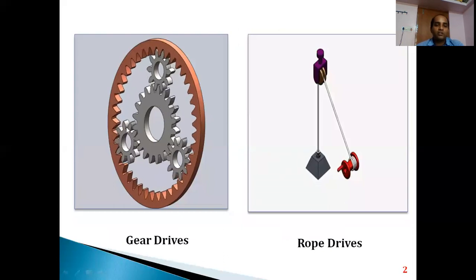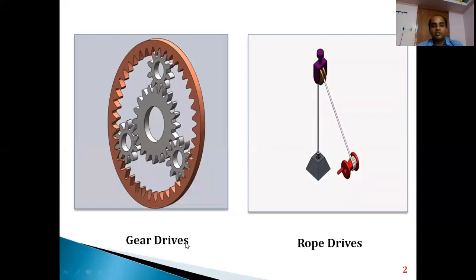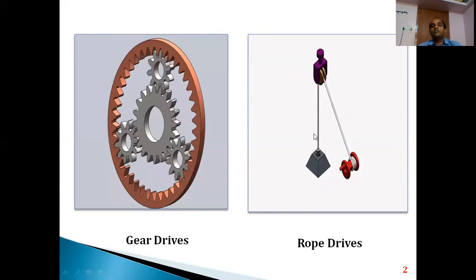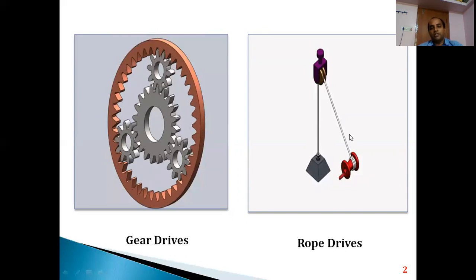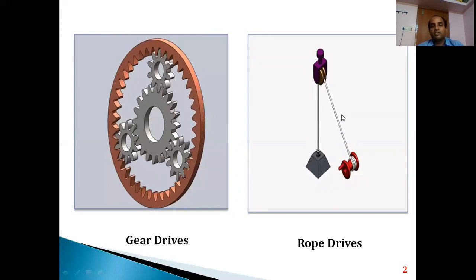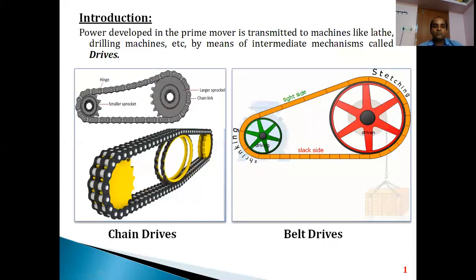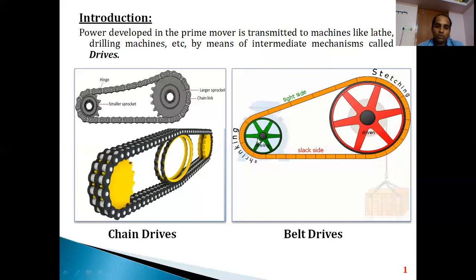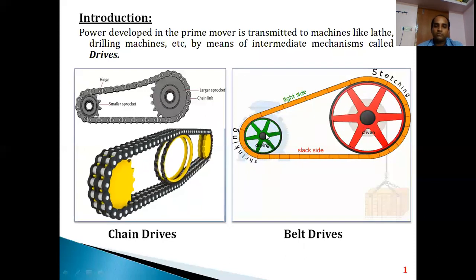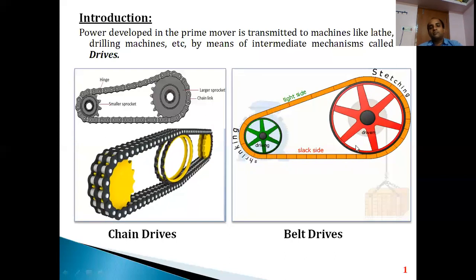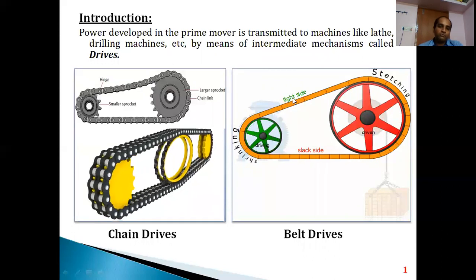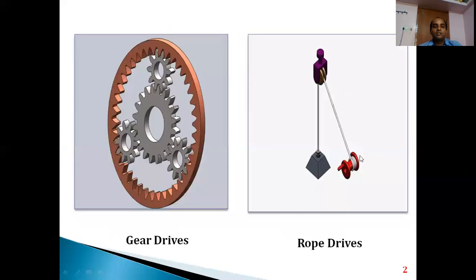Power can also be transmitted from one shaft to another using gears — we call these gear drives, which we will discuss in the next module. When lifting heavy objects where a belt is not suitable, we use a rope — these are called rope drives. Cranes use wires and cables related to rope drives. In summary, to transmit power between shafts, an intermediate mechanism called a drive is required. For our syllabus, we need to understand belt drives and gear drives.